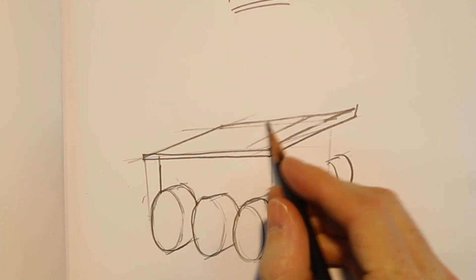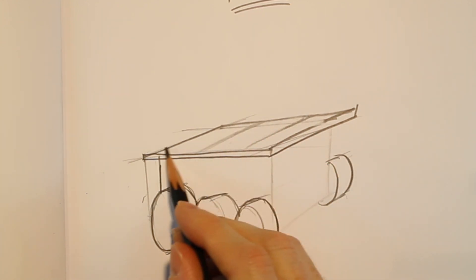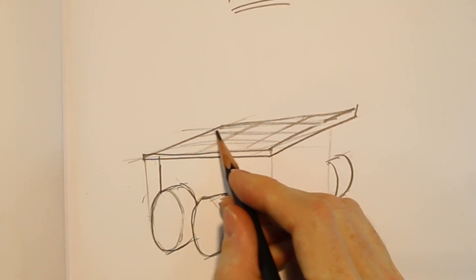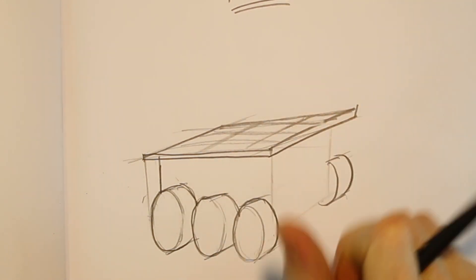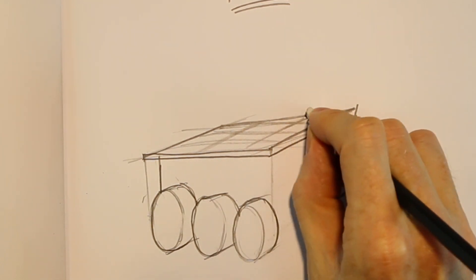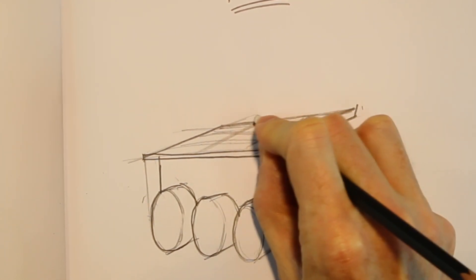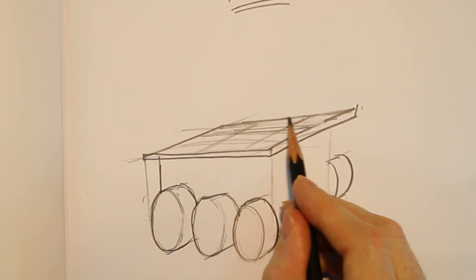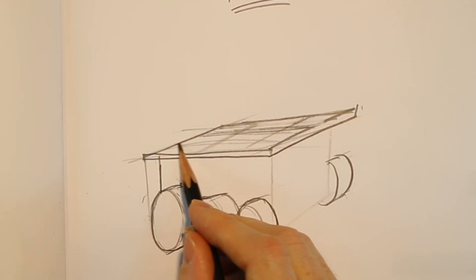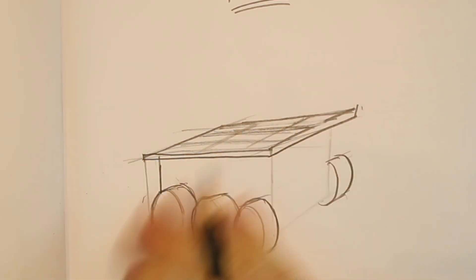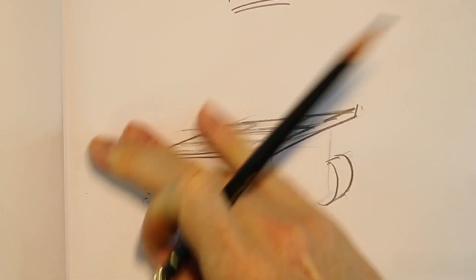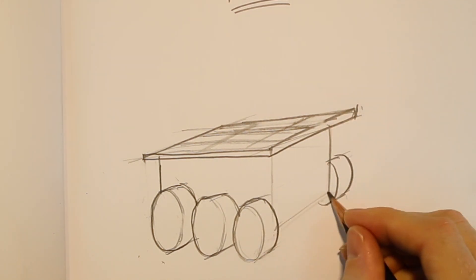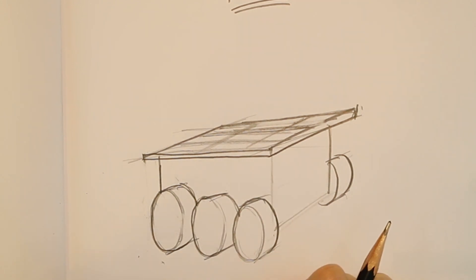And the solar panels, you can draw them by making this kind of grid shape here. So the sun comes down and gives power to the little rover. Wow, boy, that didn't come out very well at all. There we go. That's a little better. You can take that out. So you can see how it comes out a little further than the rest of the little robot.